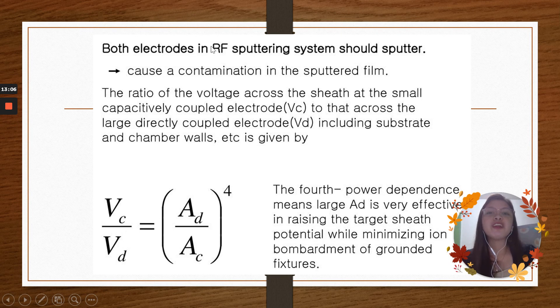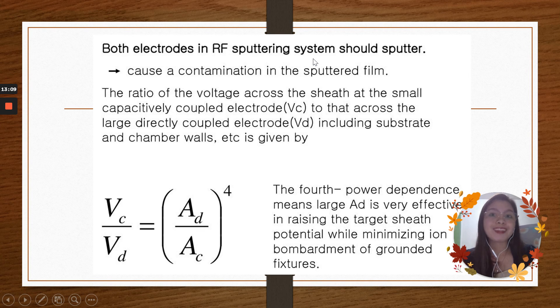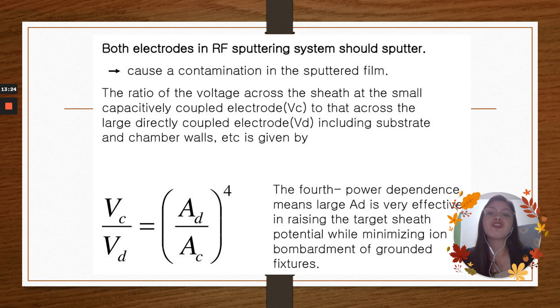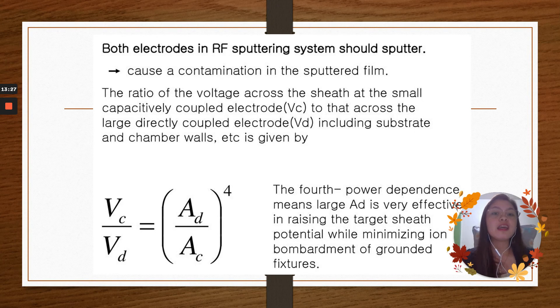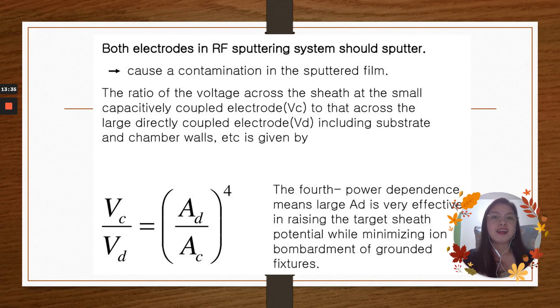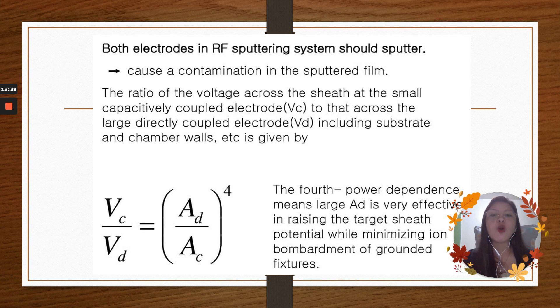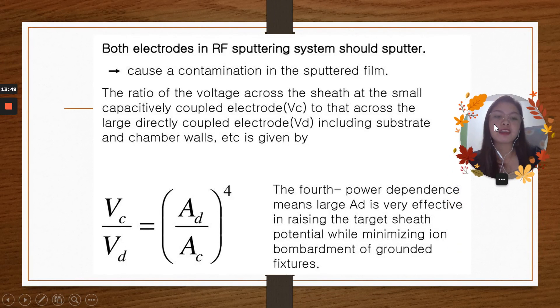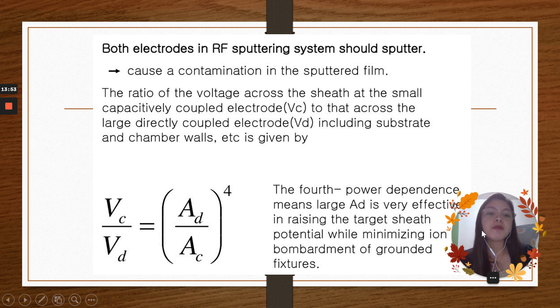Both electrodes in radiofrequency sputtering system should sputter. This causes a contamination in the sputtered field. The ratio of the voltage across the sheath at the small capacitively coupled electrode VC to the cross across the large directly coupled electrode VD, including the substrate and chamber walls, etc., is given by VC over VD equals to the quantity of A sub T over A sub C to the power of 4. This power 4, or the fourth power dependence, means large add is very effective in raising the target sheath potential while minimizing ion bombardment of grounded fixtures.